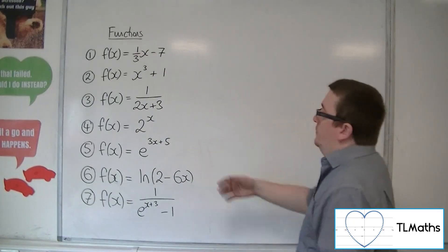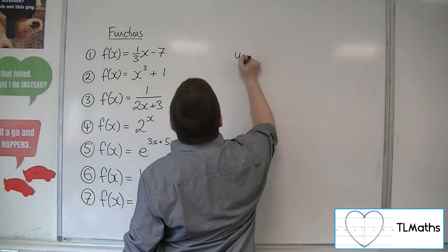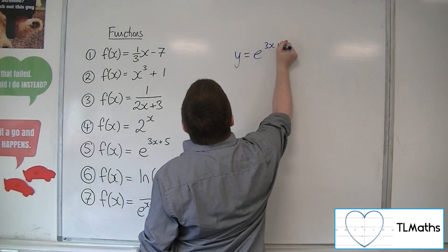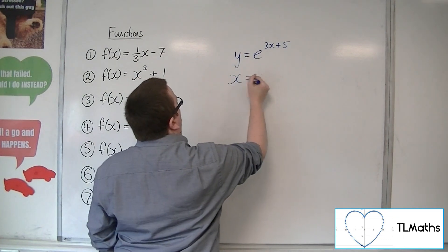Number 5, e^(3x + 5). So y = e^(3x + 5). Swap the x's and y's.